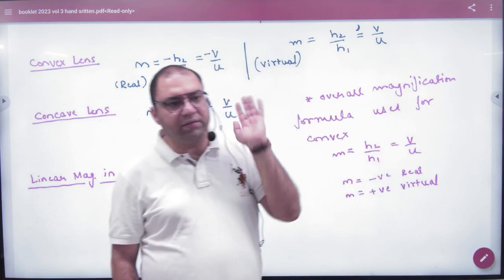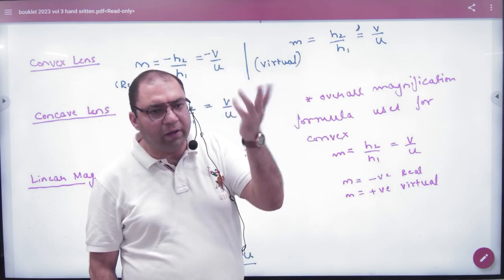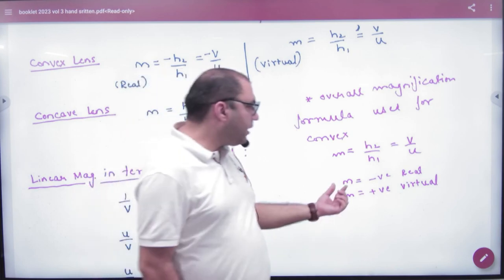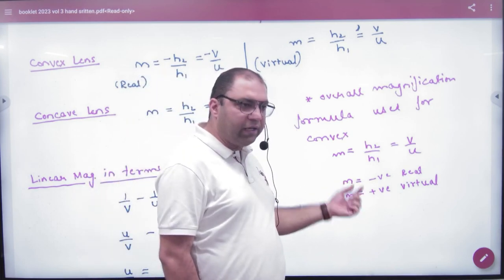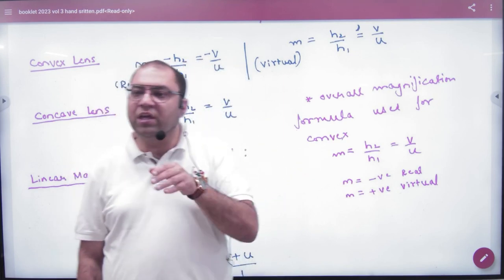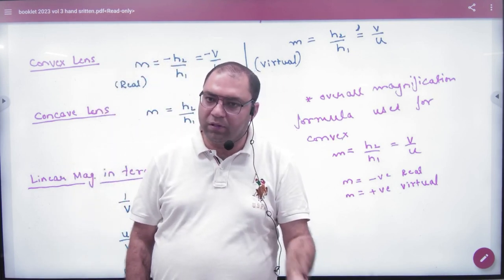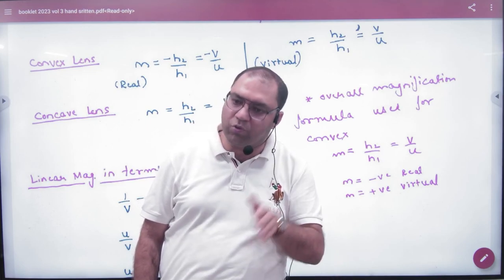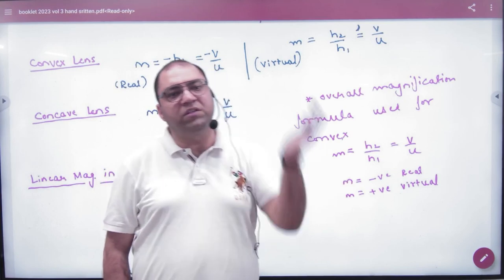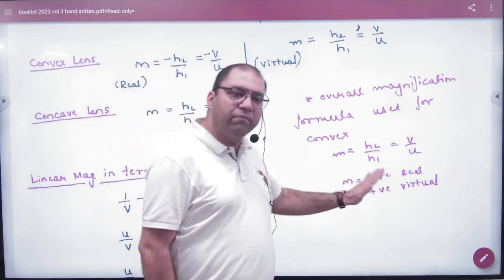We will put sign convention in numericals. We will not remember sign convention. The numerical will come, the answer will come. And in this case we will remember magnification. When the real case is made, the magnification is negative because the image is inverted. The real image is inverted, so magnification of the real is negative. And the virtual is always erect, so the magnification is positive.